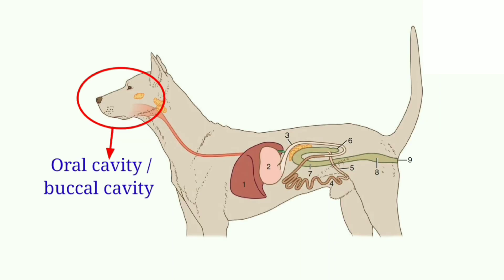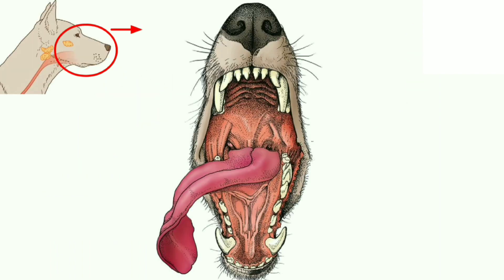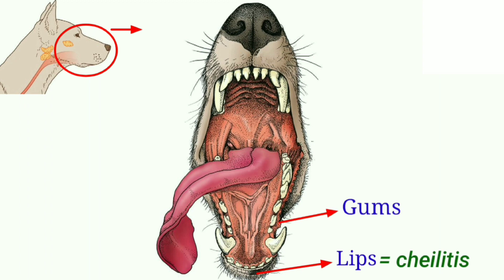First, let's start with the digestive system. In the digestive system, first is the oral cavity. Inflammation of the mucosa of the oral cavity or buccal cavity is known as stomatitis. Then, looking inside the oral cavity: inflammation of the lips is known as cheilitis, and inflammation of the gums is known as gingivitis.